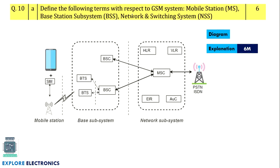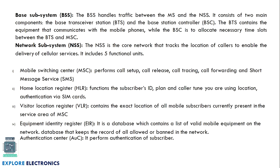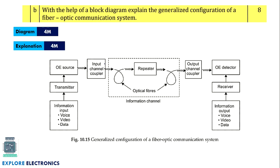Define the following terms with respect to GSM: mobile station, BSS (base station subsystem), and NSS (network subsystem). A diagram showing the mobile station, base station subsystem, and network subsystem adds importance to the answer. In the network subsystem, include MSC, HLR, VLR, EIR, and AUC. Write an explanation for each subsystem.